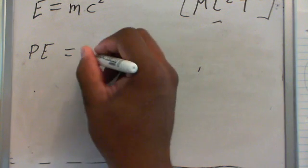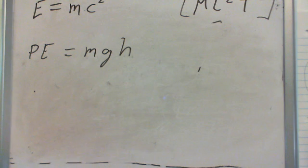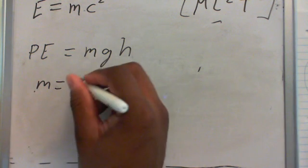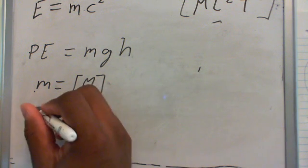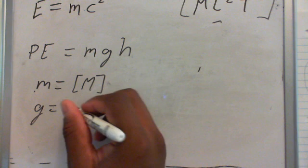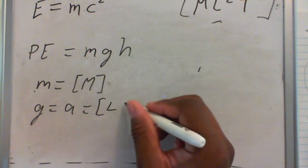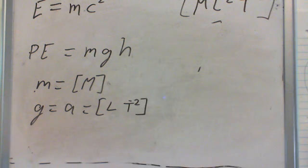Potential energy equals mass times gravity times the height of the mass. Like before, we know that M is mass and it's the M in brackets. Gravity is just acceleration, and like we showed before, acceleration is just a length over time squared.